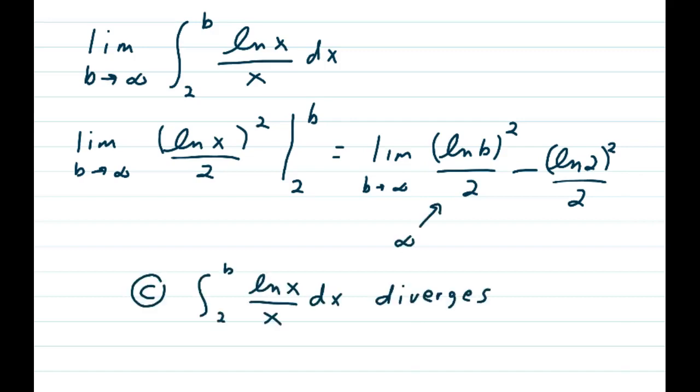And as b approaches infinity, the natural log of b squared approaches infinity divided by 2, that's certainly infinity, so the improper integral from 2 to b of the natural log of x over x dx diverges.